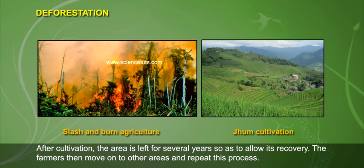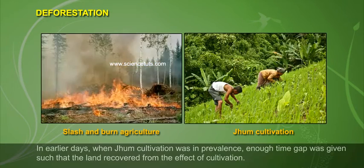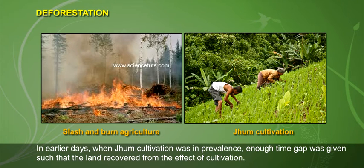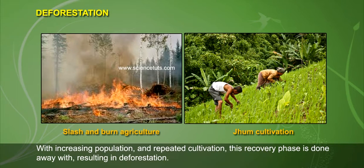The farmers then move on to other areas and repeat this process. In earlier days, when jhum cultivation was in prevalence, enough time gap was given such that the land recovered from the effect of cultivation. However, with increasing population and repeated cultivation, this recovery phase is done away with, resulting in deforestation.